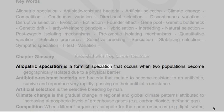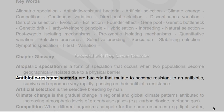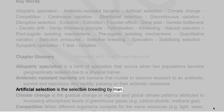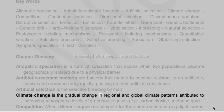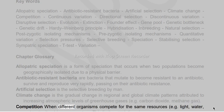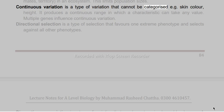Allopatric speciation occurs when two populations become geographically isolated due to a physical barrier. Antibiotic-resistant bacteria are bacteria that mutate to become resistant to an antibiotic, survive and reproduce rapidly, passing on their antibiotic resistance. Artificial selection is the selective breeding by humans. Climate change is the gradual change in regional and global climate patterns attributed to increasing atmospheric levels of greenhouse gases such as carbon dioxide and methane. Competition occurs when different organisms compete for the same resources (e.g. light, water, mates, territory) in an ecosystem, limiting population sizes.